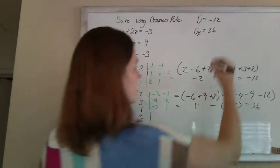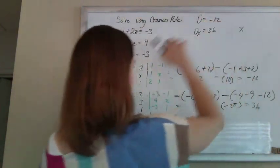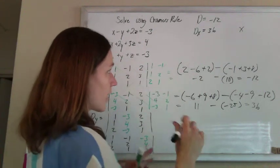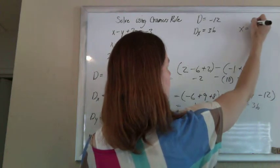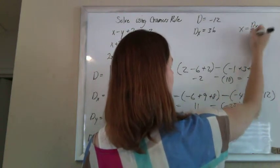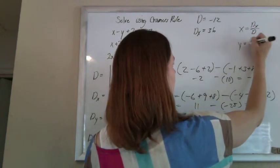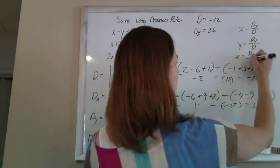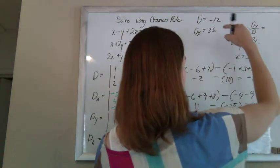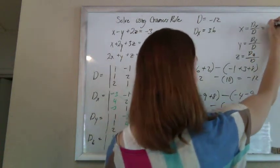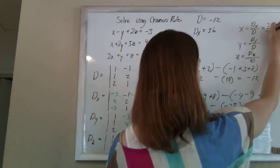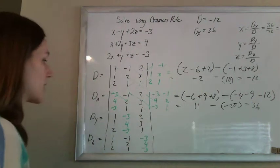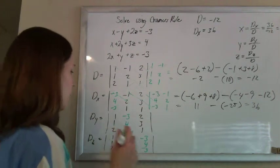Now all of my answers — this first determinant that you get is going to be the denominator for everybody. So x is going to be dx over D. Y will be whatever we get for dy over D. Z will be whatever we get for dz over D. So everybody is going to be over this negative 12. So x is 36 over negative 12, which is negative 3.